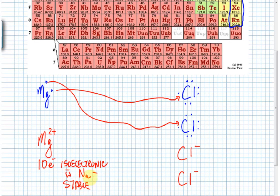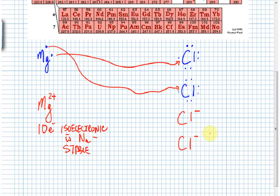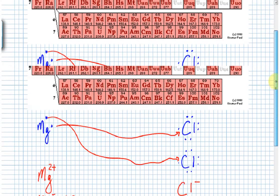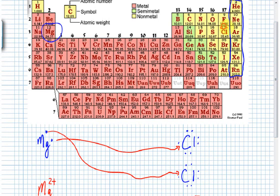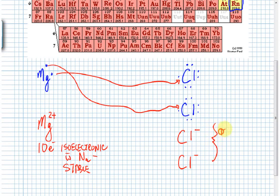Each of these chlorines has picked up one electron. Each chlorine started out with 17 electrons. Picking up one gives each chlorine the magic number of 18. So each has 18 electrons, each is isoelectronic with argon, also a noble gas. In other words, these ions are also stable.